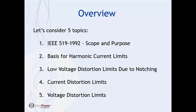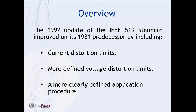Let's consider five topics today: scope and application, the basis for harmonic current limits, low voltage distortion limits due to notching, current distortion limits, and voltage distortion limits for utilities. The 1992 update improved on the 1981 predecessor by including current distortion limits, more defined voltage distortion limits, and a more clearly defined application procedure.